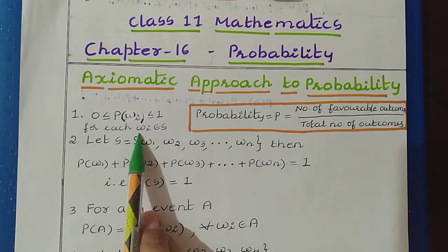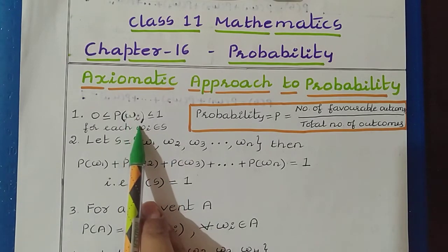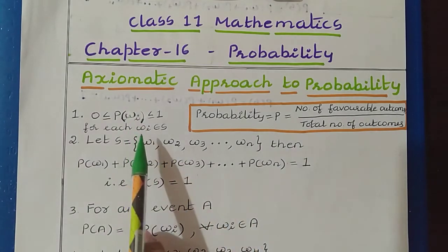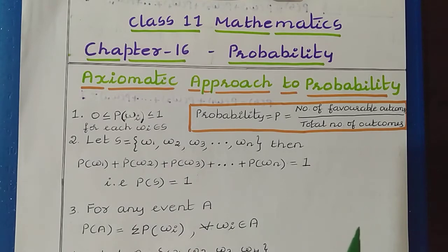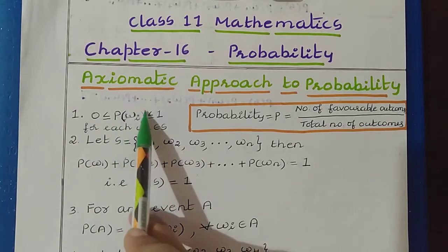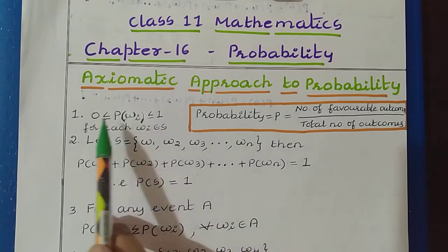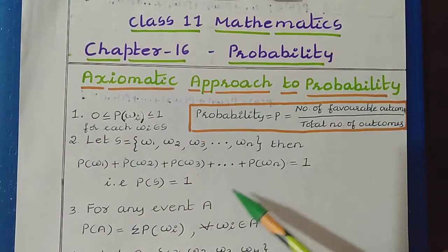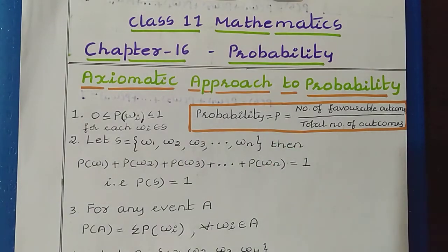Here omega means the outcome of the experiment. Omega i means we are referring to the many outcomes. So the collection of outcomes forms the event. So we can say the probability of the event is in between 0 to 1. After understanding these rules, we will consider some examples to understand this.